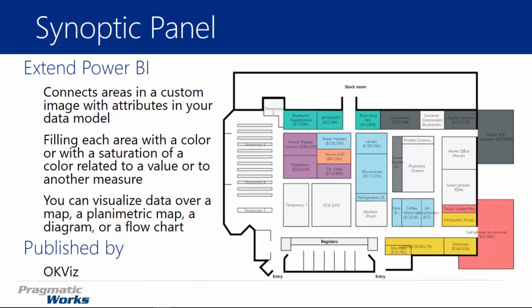Once you get a map file downloaded from their website, you can use it to fill in different areas with different color saturations, or you can use it almost like a KPI where you can have different indicators or statuses that you want to visualize on your image. So you can have all sorts of images — a map, a diagram, a flow chart, really anything you want. If it's an image and you can outline different areas to apply data to, this is a great visual to do that.